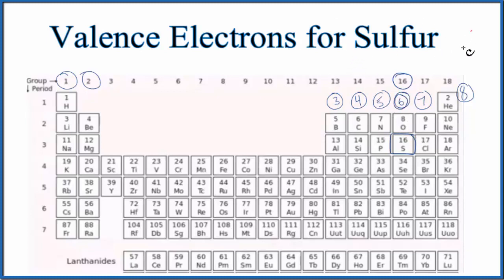So sulfur has 6 valence electrons. We could also look at the electron configuration for sulfur. Sulfur has 16 protons, that's its atomic number. And since these are all neutral, it has 16 total electrons. If we write the configuration, it'll look like this. We add all these numbers up on top, we get 16.